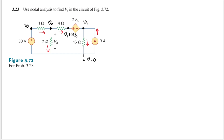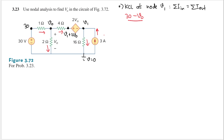Let's do KCL at node V0. KCL states that the sum of currents going in equals the sum of currents going out. The only current going in is (30 minus V0) divided by the resistance between them, which is 1. Then this current is V0 minus 0, divided by 2.